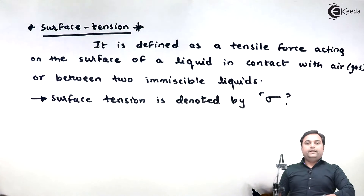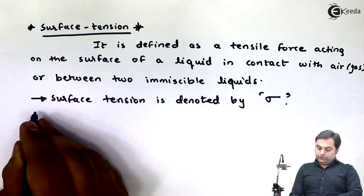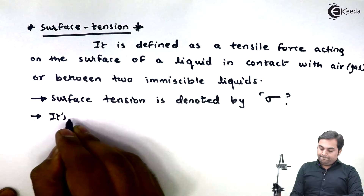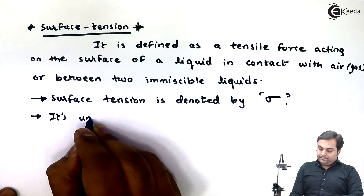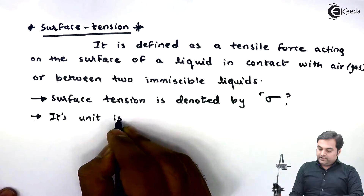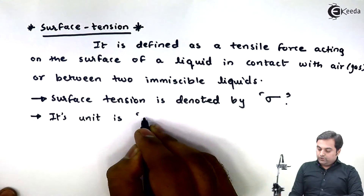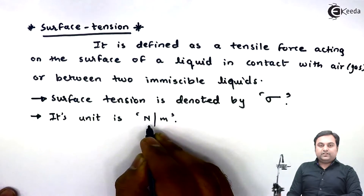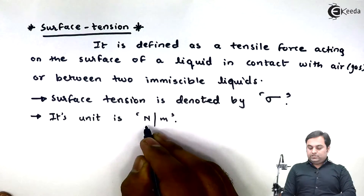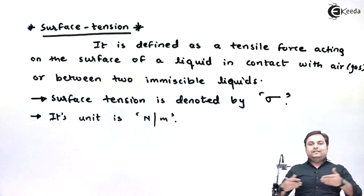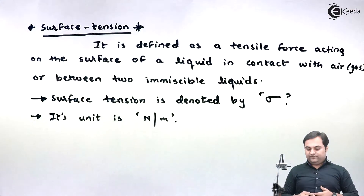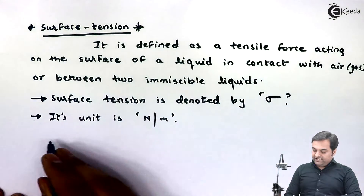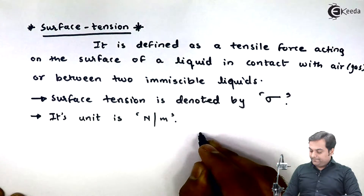Its unit is Newton per meter, because surface tension is the force per meter distance of length of the surface.